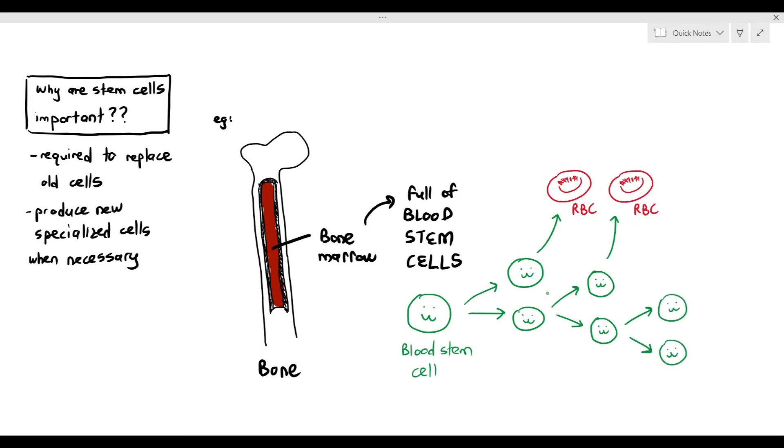Another example is when your body is exposed to certain pathogens or you have an infection in your body, some of the blood stem cells can divide and differentiate to become a white blood cell, which is a phagocyte, and the function of the phagocyte is to remove the infection in your body. And we still have a stem cell, and that stem cell can continue dividing, and it can produce new cells in our body as and when we require it.